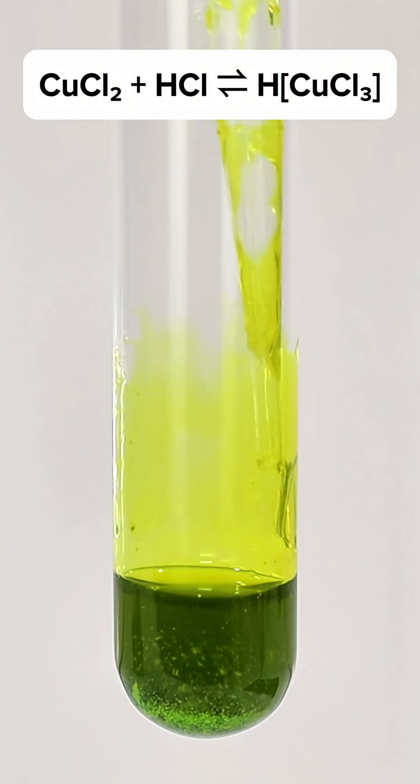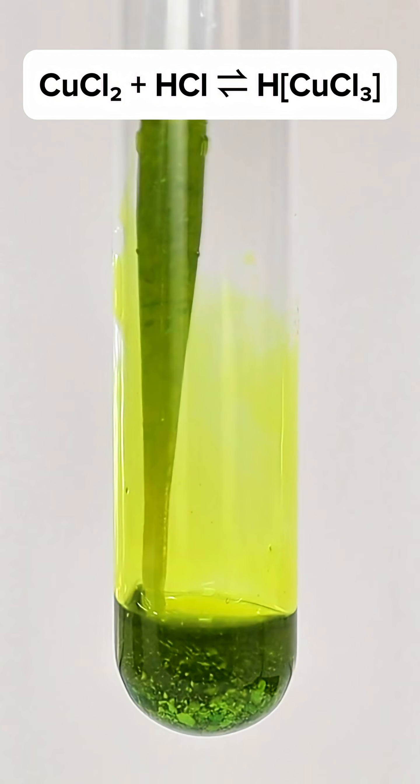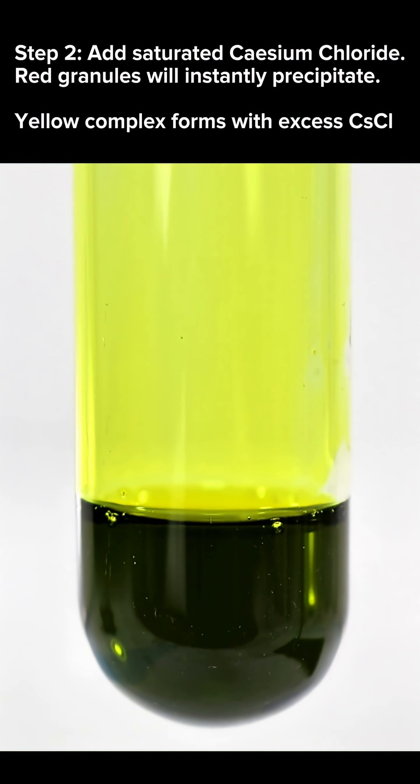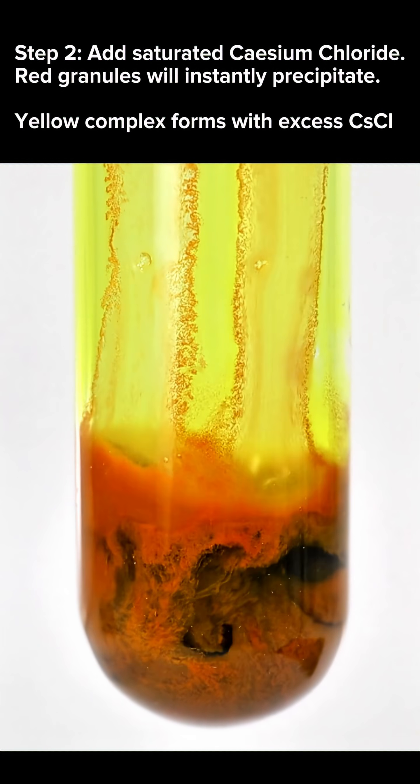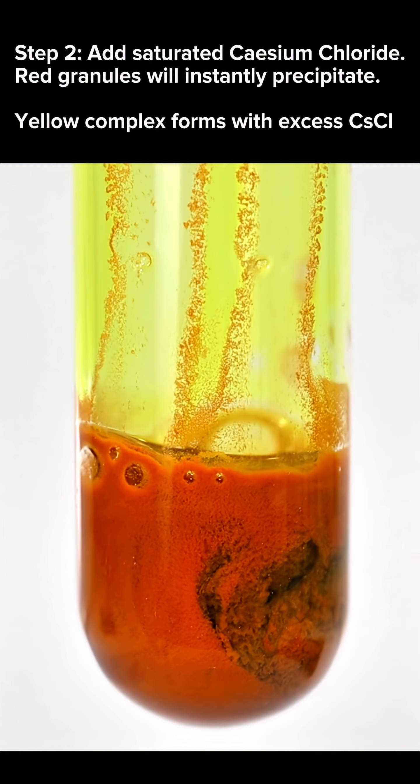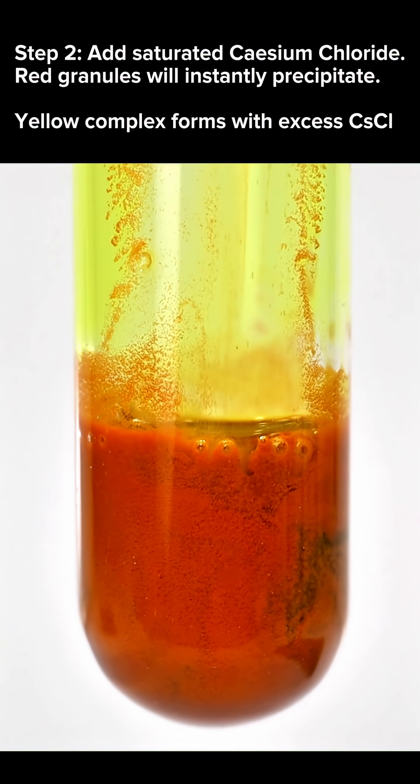This will form a complex with the copper chloride, which is a very distinct olive green color. At this point, all I do is add some saturated cesium chloride, which will immediately begin to form a dense red precipitate.